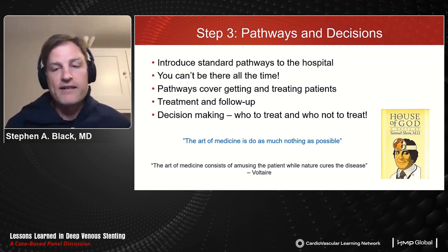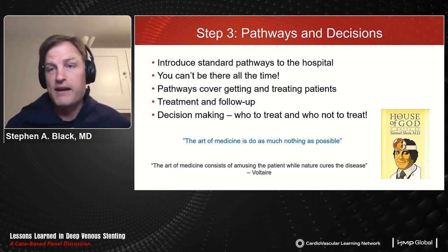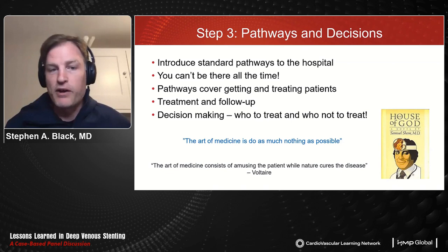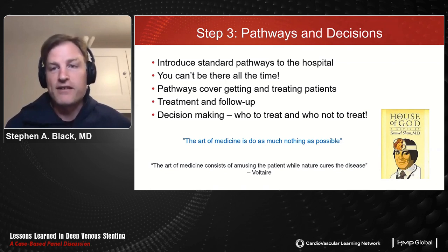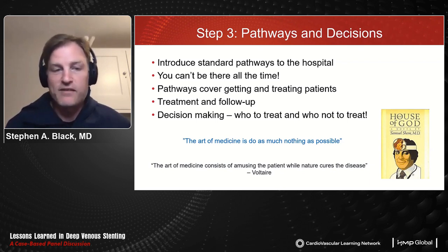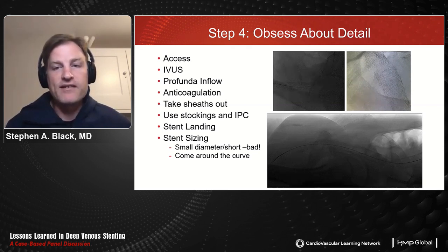Decision-making pressure in venous disease comes from untreated patients who've had years of mismanagement, complex disorders, and the ease of making a diagnosis based on imaging that may not reflect true pathology. The quote from the House of God applies: 'the art of medicine is to do as much nothing as possible.' Even when innovating, you must be sure your patient needs that treatment or intervention, because if you don't do something, nothing can go wrong from what you've done.